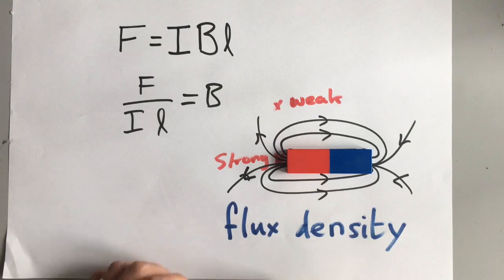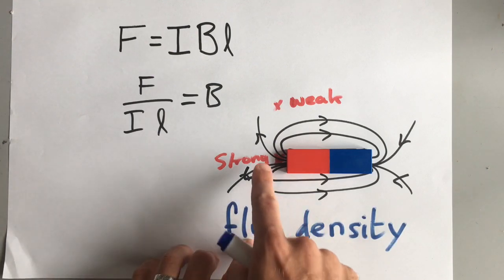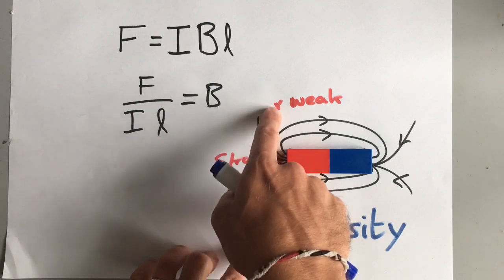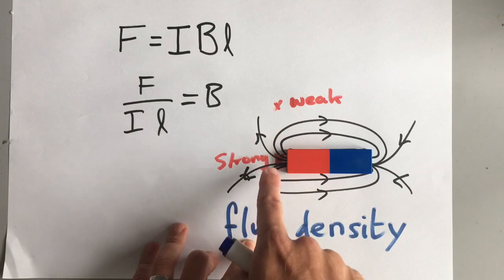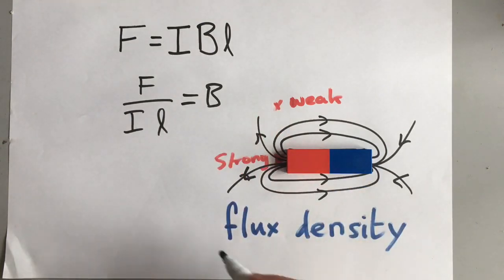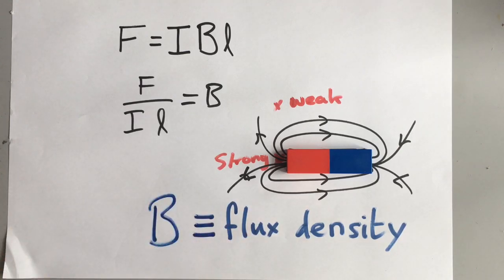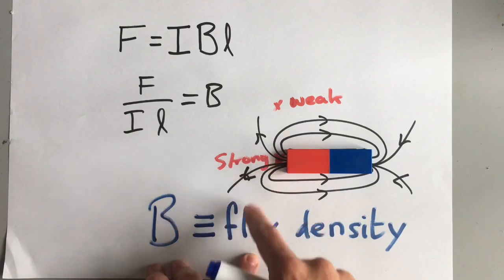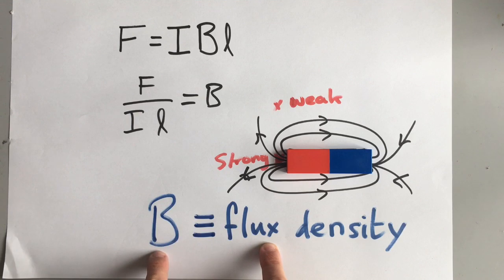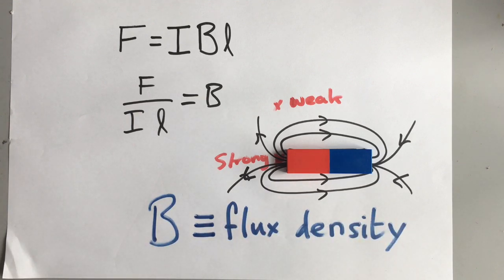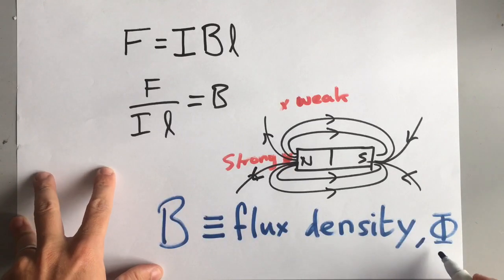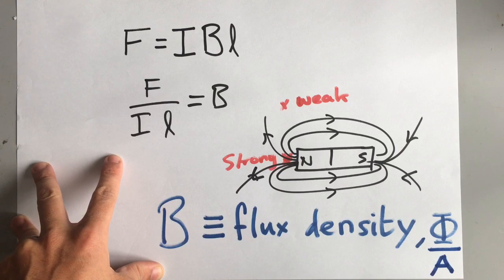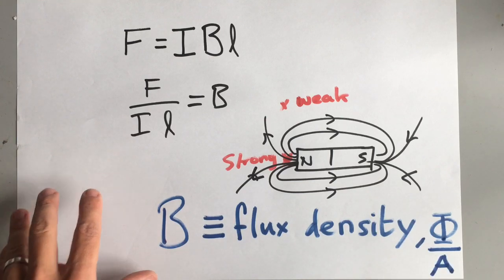Flux density is the amount of flux in a particular area. We have a high flux density where there are more field lines per unit area, and a low flux density where there are fewer. Flux density is equivalent to magnetic field strength. The symbol for flux density is flux divided by the area it passes through — so flux density equals Φ over A.